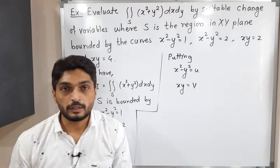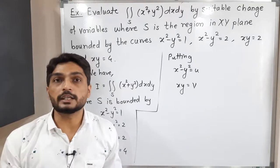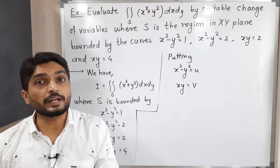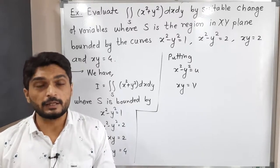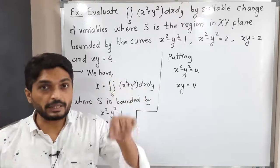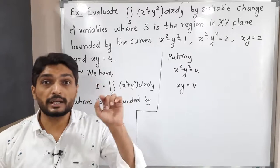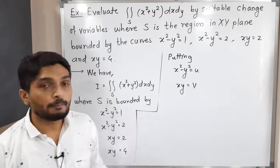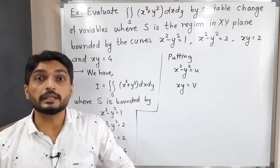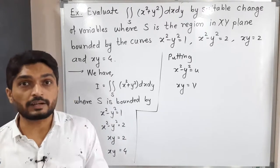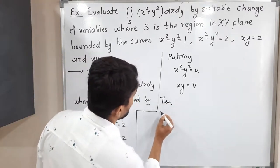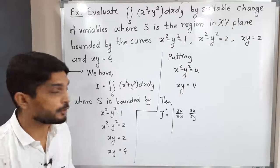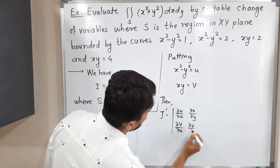Just as in single integration we find derivatives after substitution, in double integration we need to find the Jacobian. The Jacobian formula uses the determinant of ∂x/∂u, ∂x/∂v, ∂y/∂u, ∂y/∂v — but for that we need x and y in terms of u and v. Since we have u and v in terms of x and y, instead of finding the Jacobian directly, I will find J', where J' uses ∂u/∂x, ∂u/∂y, ∂v/∂x, ∂v/∂y — exactly the opposite of the Jacobian.